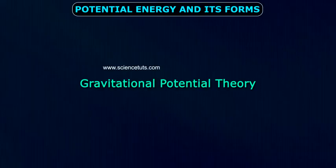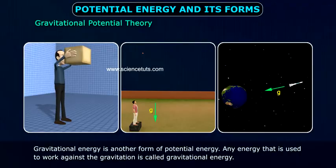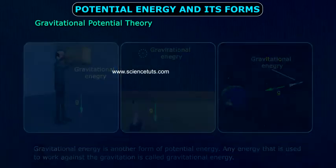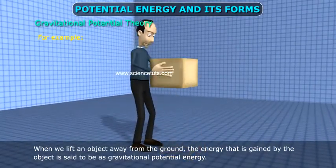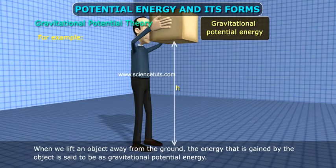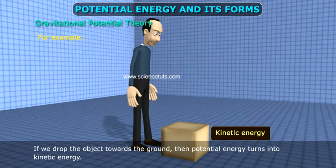Gravitational potential energy. Gravitational energy is another form of potential energy. Any energy that is used to work against the gravitation is called gravitational energy. For example, when we lift an object away from the ground, the energy that is gained by the object is said to be gravitational potential energy. If we drop the object towards the ground, then potential energy turns into kinetic energy.